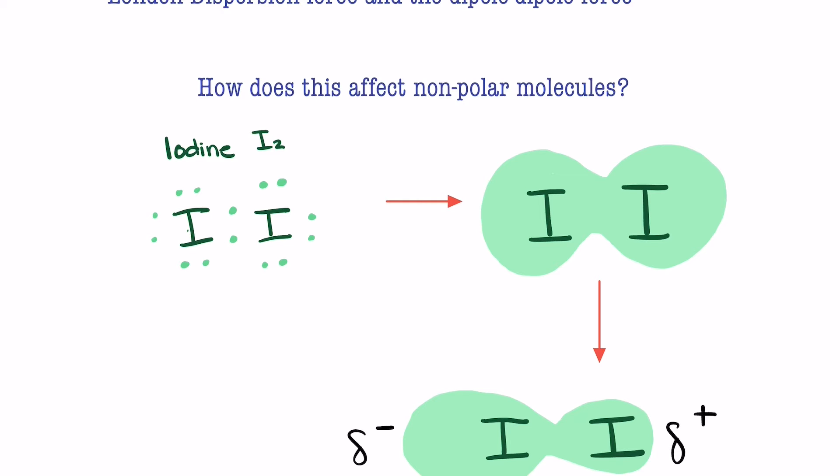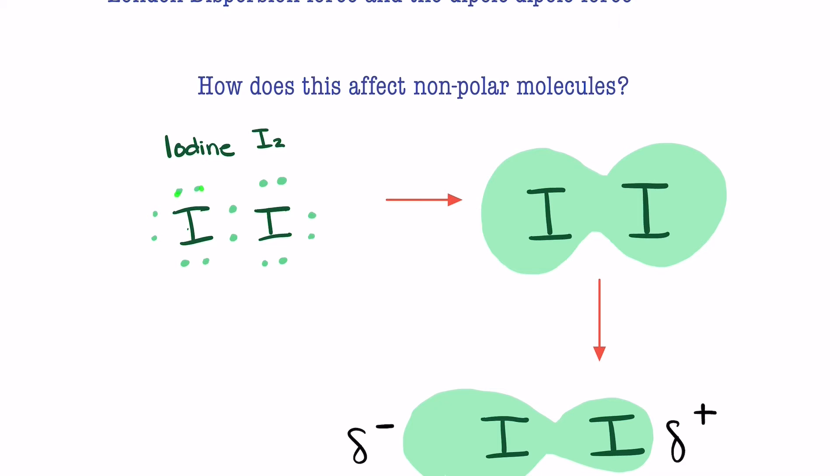Now let's talk about London dispersion and non-polar molecules. Here I have iodine. Here is the symbol for iodine. Let's pretend this is the nucleus here, and I've drawn out all of the electrons around I2.